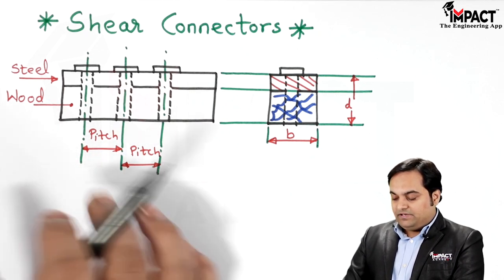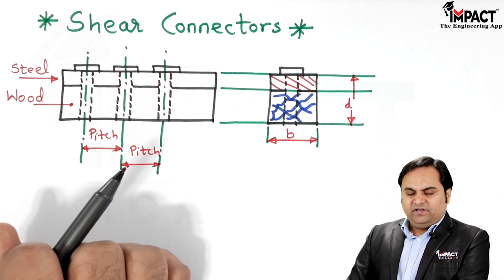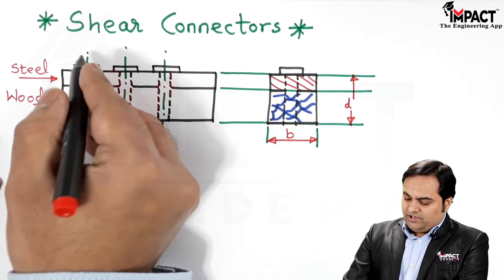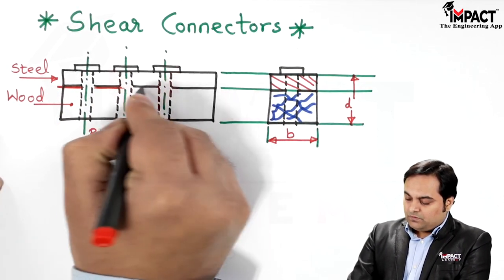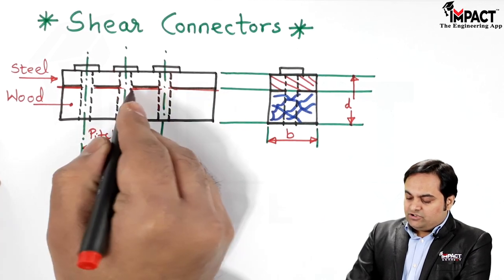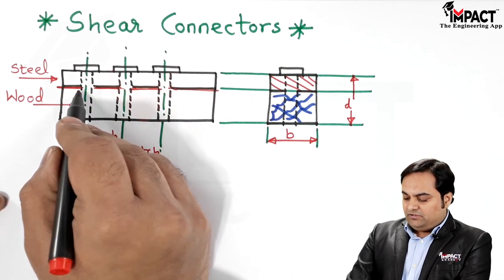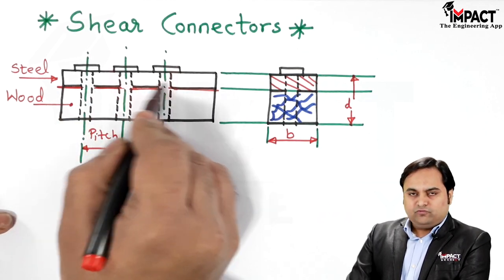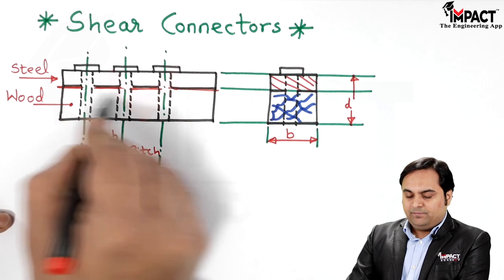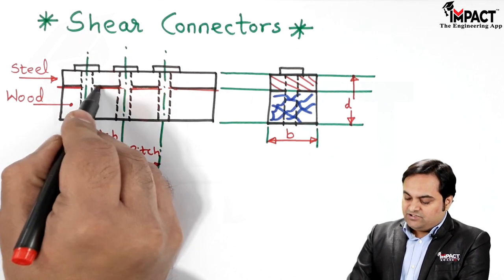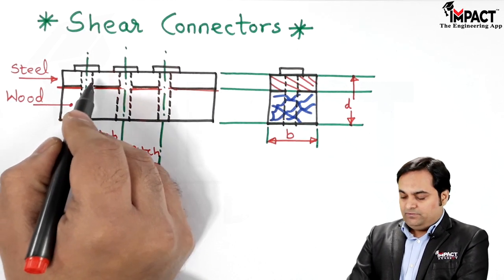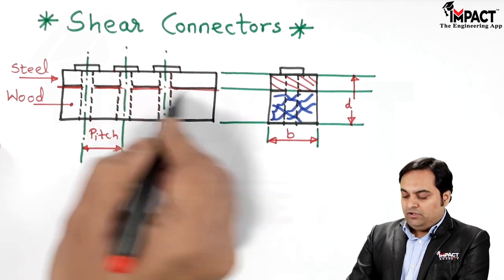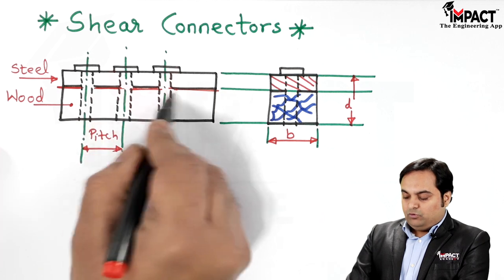Due to the applied force, there will be shearing action taking place at the junction between steel and wood. This shearing action will result in the breaking or shearing of the bolts, because due to the shear force there will be sliding of the members. At the junction, shear stress is developed in these bolts, resulting in a shear force in each bolt.